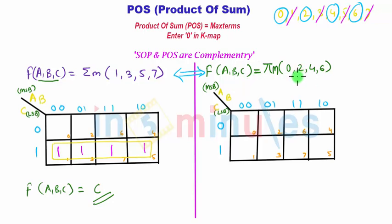So this will be the equivalent POS form for the sum of product 1, 3, 5, 7. And we all know that we are going to enter zero in the K-map for the POS. So we will enter zero in this location, that is 0, 2, 4, and 6.